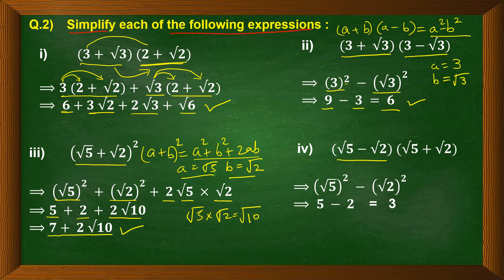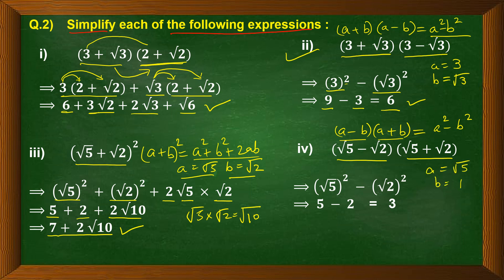The fourth part is (root 5 − root 2)(root 5 + root 2). This resembles the identity a minus b into a plus b equals a squared minus b squared, where a = root 5 and b = root 2. Applying the identity: (root 5)² minus (root 2)² equals 5 minus 2, which equals 3. So the answer is 3.